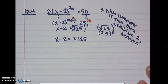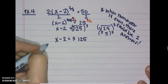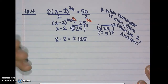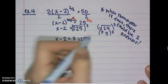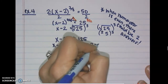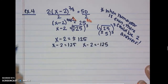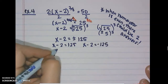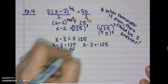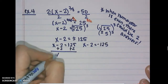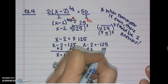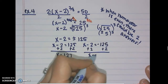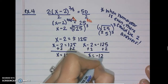So we have two cases: x minus 2 equals positive 125, or x minus 2 equals negative 125. Adding 2 to both sides in each case gives x equals 127 or x equals negative 123.